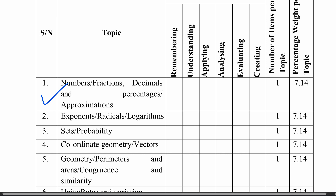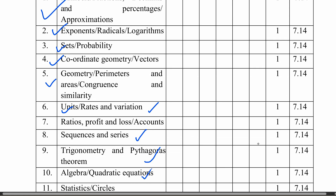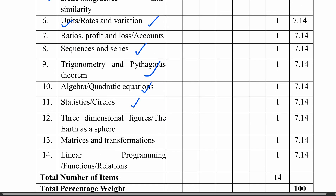Question 3 will be on sets or probability. Question 4 covers coordinate geometry and vectors. Question 5 is on geometry, perimeters, areas, congruence and similarity. Question 6 covers units, ratios and variations. Question 7 covers ratio, profit, loss and accounts. Question 8 is on sequence and series. Question 9 covers trigonometry and the Pythagorean theorem. Question 10 is on algebra and quadratic equations.